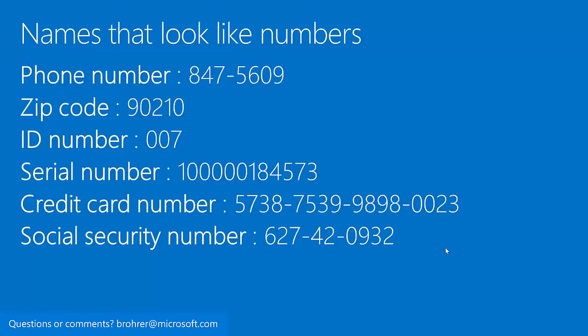Now, to confuse this issue, there are names that look like numbers. A phone number — if you change it by just one, it points to an entirely different person. That person's not necessarily closer than if you change it by a thousand or ten thousand. A phone number is a name that looks like a number. Similarly, a zip code — if you change it by just one or two, you might find a place that's relatively close geographically, but it will still be a completely different place. Identification numbers — 007. Serial numbers, credit card numbers, social security numbers. You change any one of those by ten, or by a thousand, or by a million — either way, they'll point to something completely different.